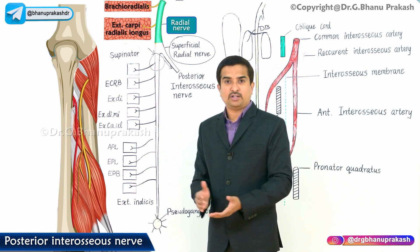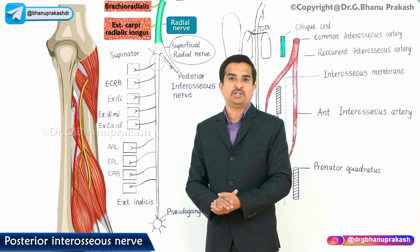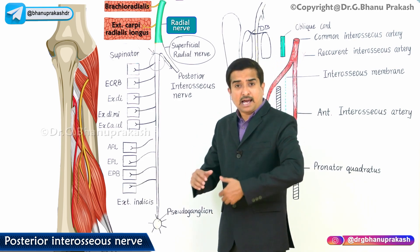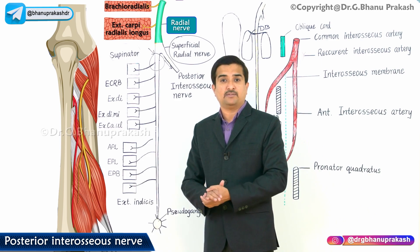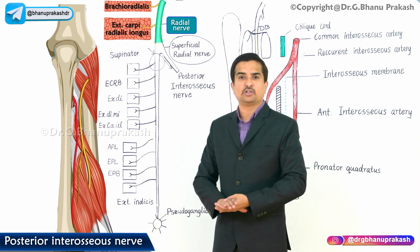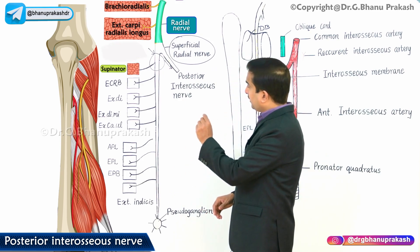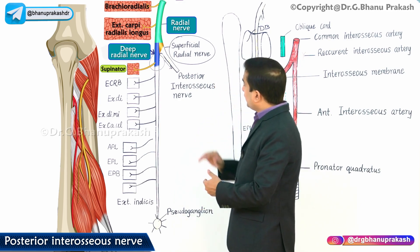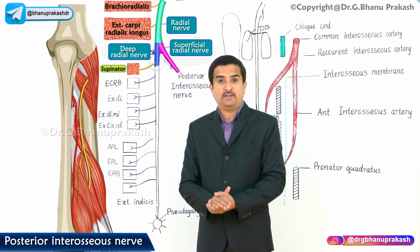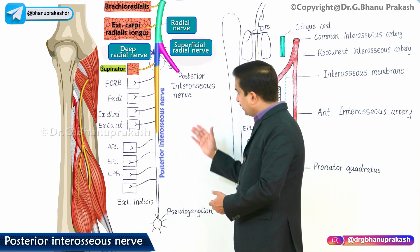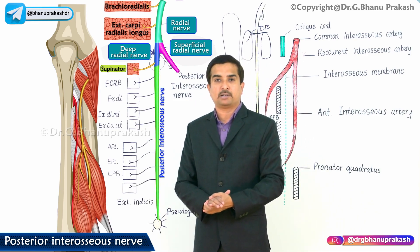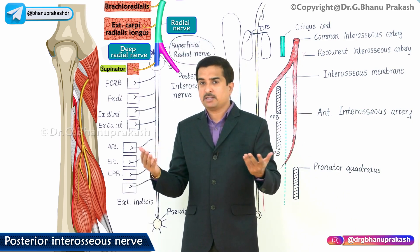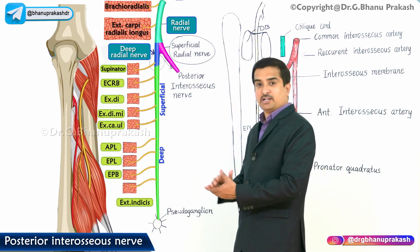Brachioradialis and extensor carpi radialis longus are not innervated by the deep branch or the posterior interosseous nerve. Another muscle at the posterior aspect of the arm, the anconeus, is also innervated directly by the radial nerve. The supinator is the only muscle innervated by the deep branch of the radial nerve. The superficial branch of the radial nerve is cutaneous and gives no muscular branches. The posterior interosseous nerve is the chief nerve of the posterior compartment of the forearm, innervating the majority of the muscles.